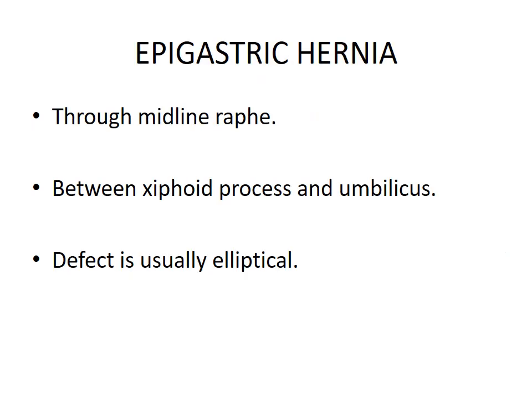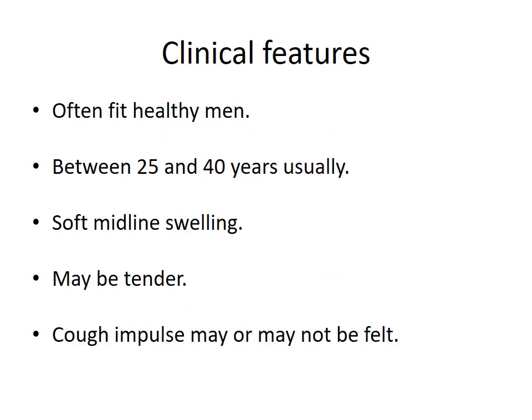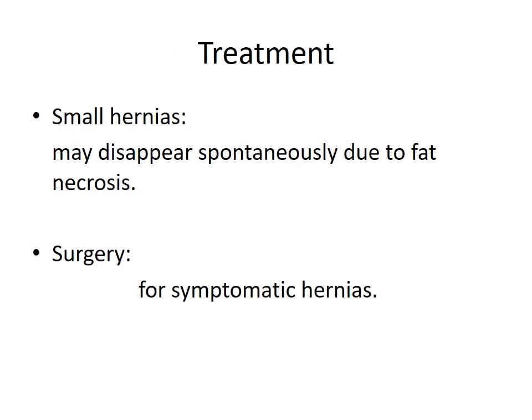Epigastric hernia: the hernia comes out through the midline raphe between the xiphoid process and the umbilicus. The defect is usually elliptical. The defect occurs at a site where small blood vessels pierce the linea alba. Contents commonly include extraperitoneal fat and may contain a peritoneal sac. Clinical features: often affects fit healthy men between 25 and 40 years; there is a soft midline swelling that may be tender, and the cough impulse may or may not be felt. Small hernias may disappear spontaneously due to fat necrosis; surgery is indicated for symptomatic hernias.